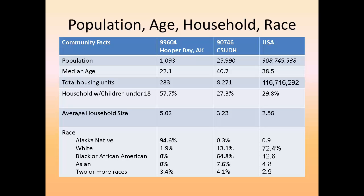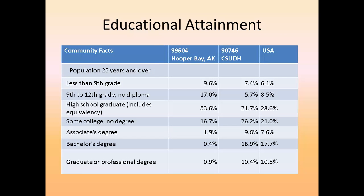I also contrasted educational attainment levels. Some of the differences are that in Hooper Bay, Alaska, less than 1% of the population has a graduate or professional degree, whereas 10% of the area around California State Dominguez Hills and the USA as a whole have obtained graduate or professional degrees.